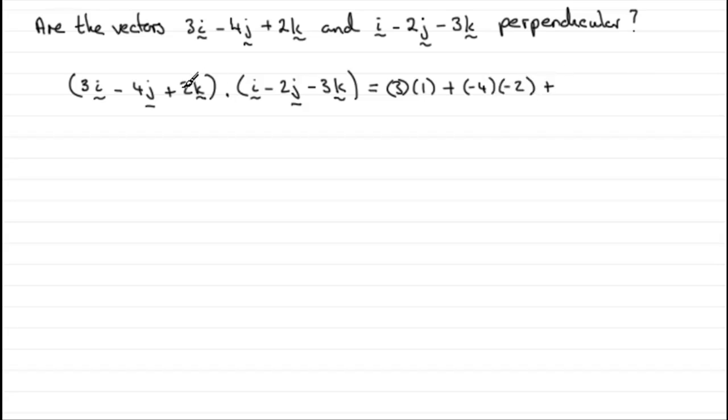And then plus 2 times the minus 3. And what does that give us? 3 plus 8 minus 6. A total of 5. Which isn't equal to 0.